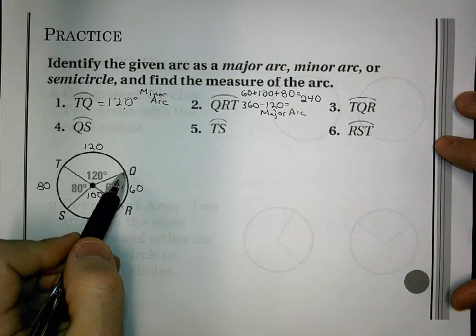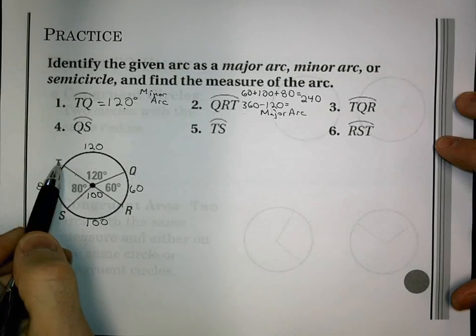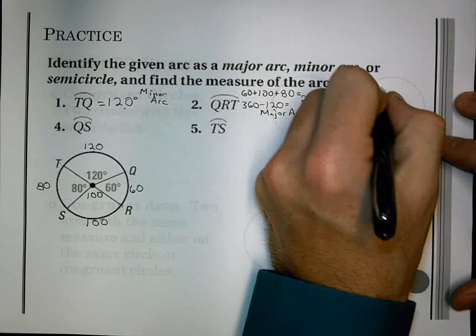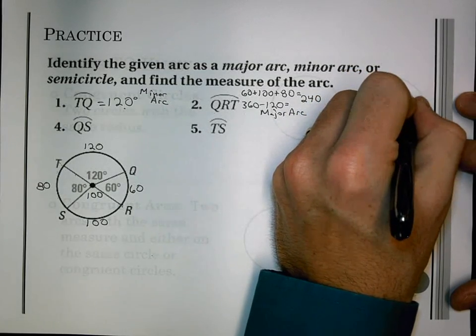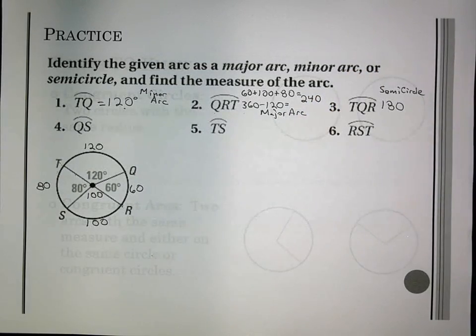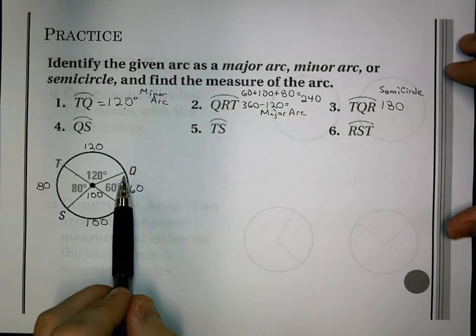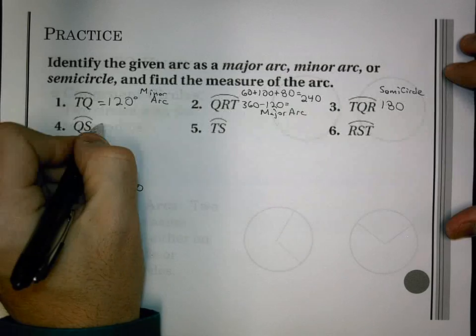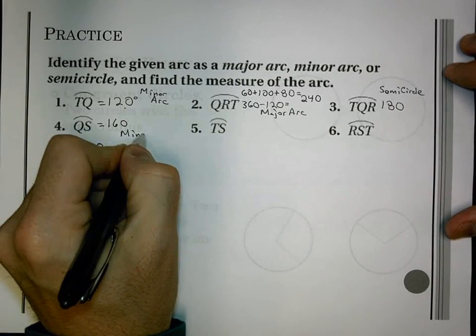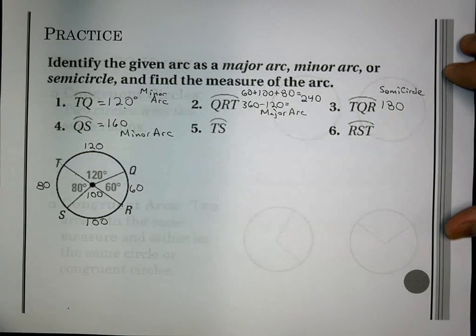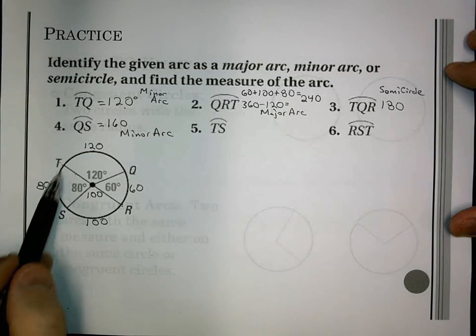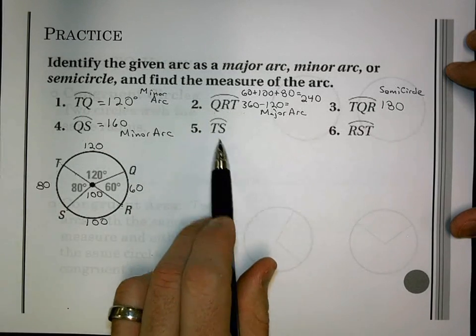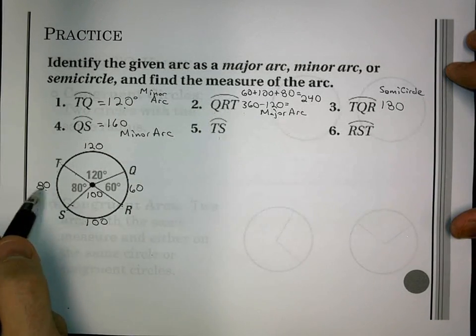TQR starts at T, goes through Q, ends at R. That one looks like a diameter, with TR, so that's going to be 180, semicircle. And then we have QS, starts at Q, ends at S, that's 60 and 100, or 160. And that is a minor. Then I have TS, starts at T, ends at S. Don't get in the trick of going all the way around. It's just a direct one. Two letters, it's going to be a minor. So, 80 degrees.